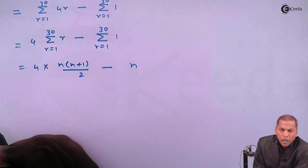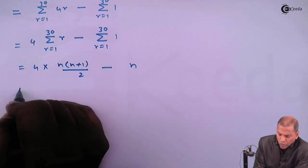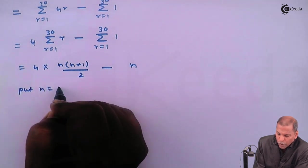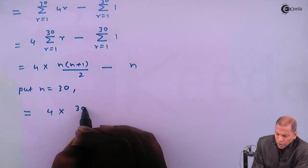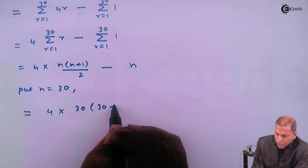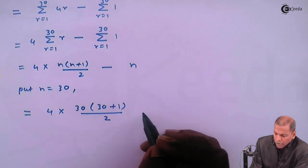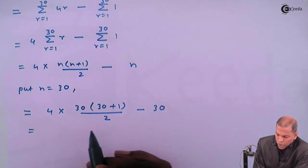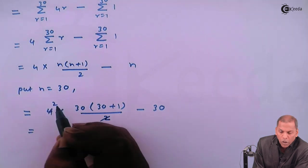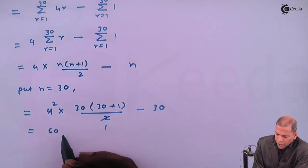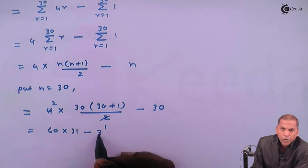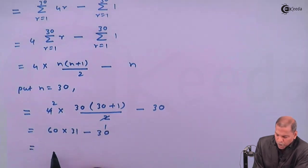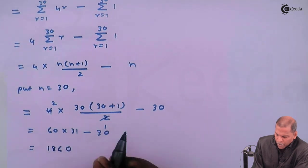In the present case the value of n is 30. So putting n equal to 30, the next step is: 4 times 30(30+1)/2 minus 30. That gives — 2 cancels with 4 to give 2, then 30 times 2 equals 60, into (30+1) equals 31, minus 30. So 60 times 31: write 0, 6 ones are 6, 6 sixes are 18 — giving 1860, minus 30.